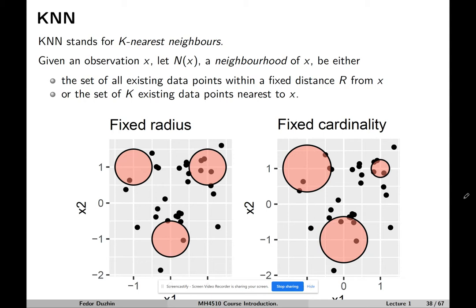The first choice is the set of all existing data points within a fixed distance from x. So, our x can be at different positions — say minus 1, 1; 0, minus 1; or 1, 1. We take a circle, or a ball, of a fixed radius, and we take all observations that fall into that radius. The number of observations will differ: for one circle there may be just one observation, while for another there could be four.